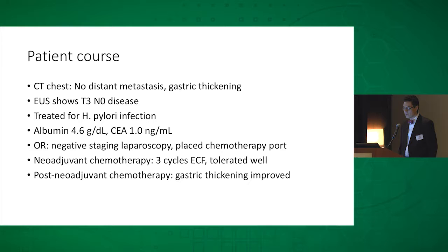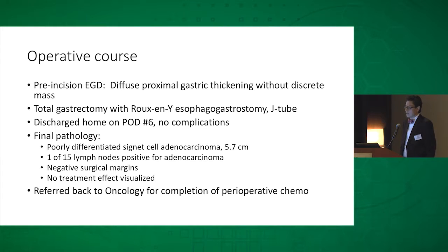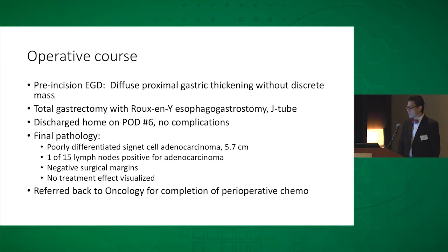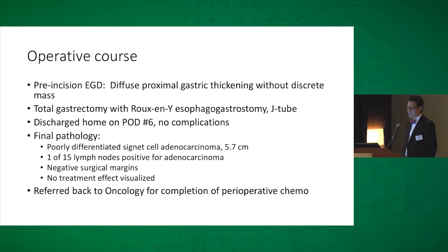He received three cycles of ECF chemotherapy and tolerated this very well. After his neoadjuvant chemotherapy, the gastric thickening improved. I took him back to the operating room, started with an EGD showing diffuse proximal gastric thickening — no mucosal mass, which can often be misleading. He needed a total gastrectomy with a Roux-en-Y esophagogastrostomy, had a feeding tube placed, and went home on post-op day six. His final pathology is notable: despite good neoadjuvant therapy, he still had a 5.7 cm gastric cancer. Even though EUS showed N0 disease, surgically he had one out of 15 positive nodes after chemotherapy. These are patients where you have to do a really good operation, because chemotherapy is not a bailout for quality surgery.